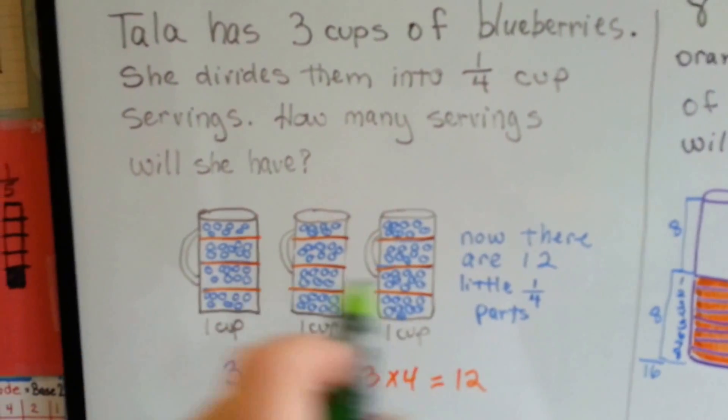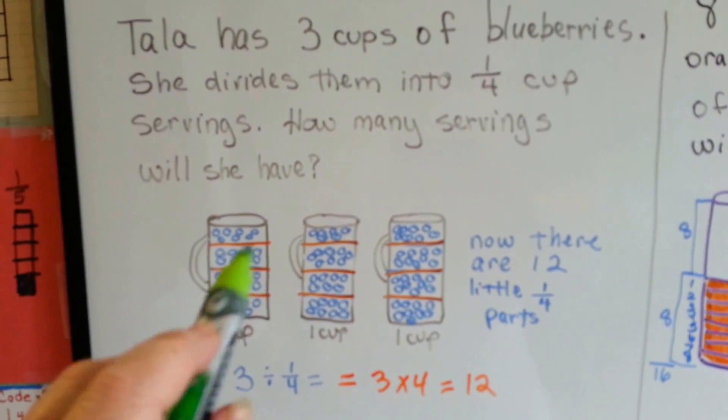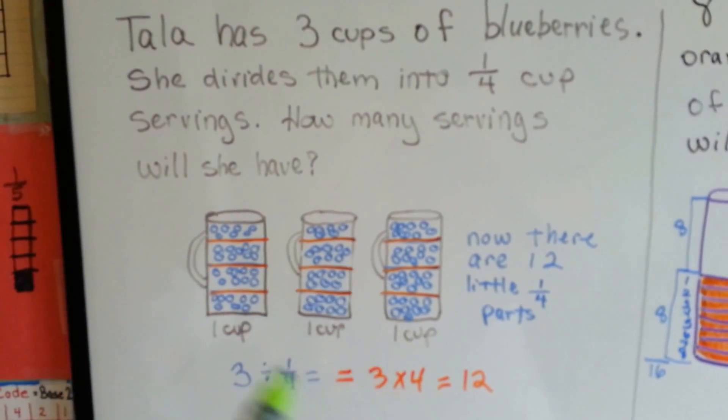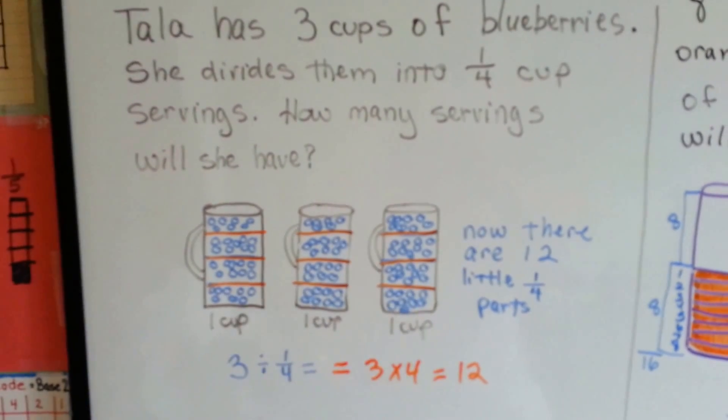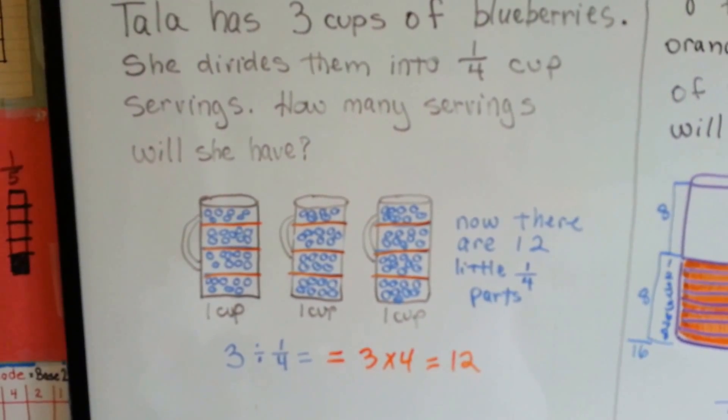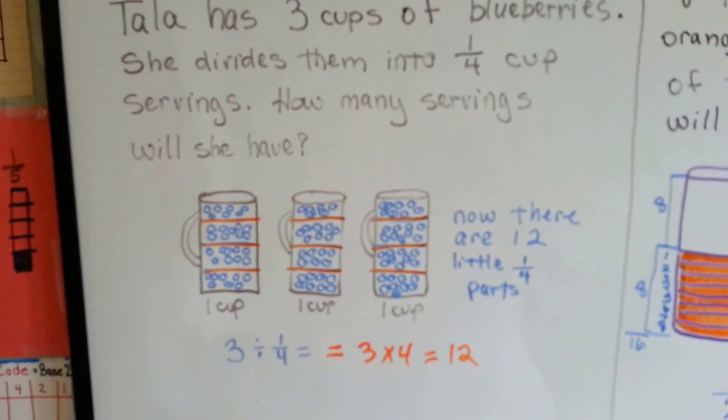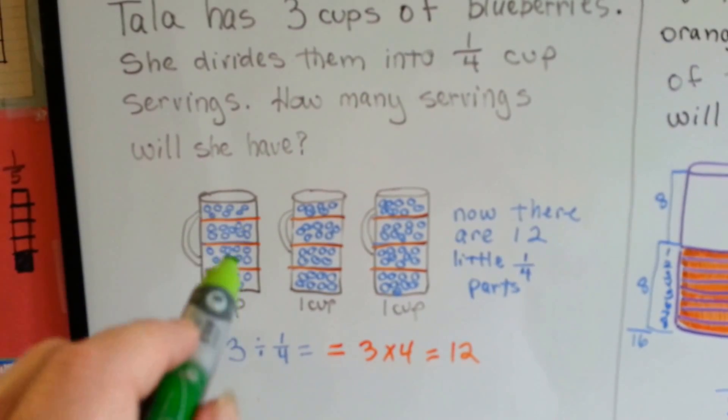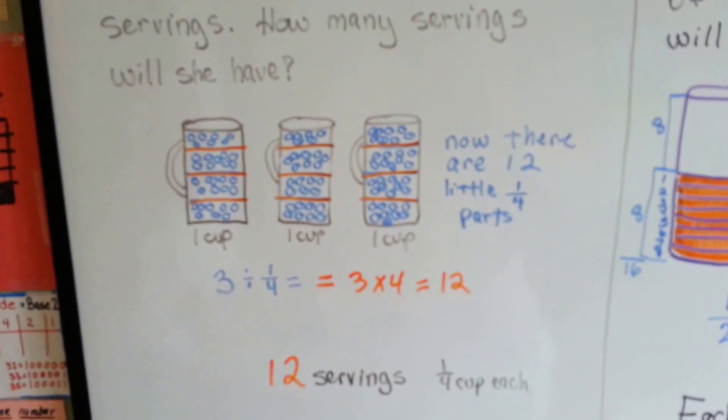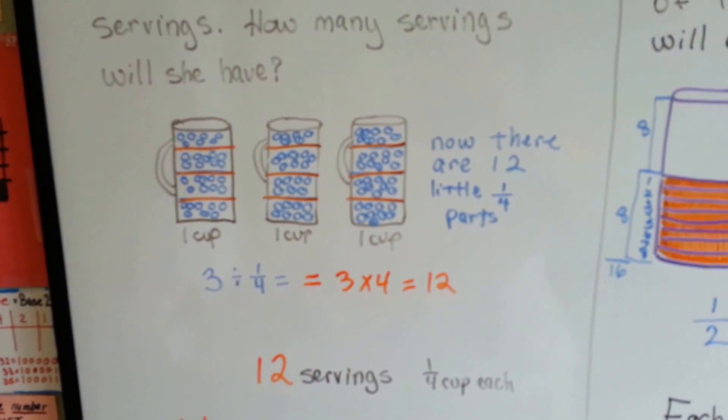By drawing the three cups and dividing them into one-fourth cup parts, we can easily see what's going on. We can see there are twelve parts. There's three cups of blueberries. They're split into quarter cup pieces. And there's twelve. Three times four is twelve. So she's got twelve servings.